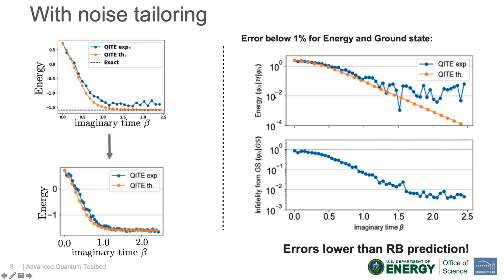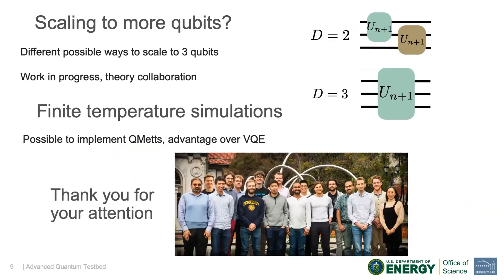And the good point is we are now able to converge at about one percent of error both in energy, so this is the error on the true ground state energy, and here's the infidelity from the ground state versus the imaginary time. We see that using these methods, we manage to go below one percent for both.